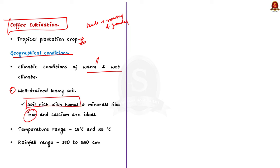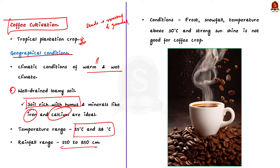The temperature range for coffee should be between 15°C and 28°C, and the rainfall range should be 150 to 250 centimeters. Coffee is generally grown under shady trees, so conditions like frost, snowfall, temperatures above 30°C and strong sunshine are not good for cultivation. Coffee requires dry weather at the time of ripening of the berries and is grown on hill slopes at heights of 600 to 1600 meters above mean sea level.